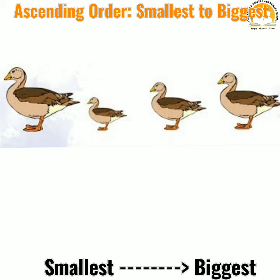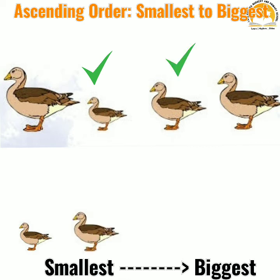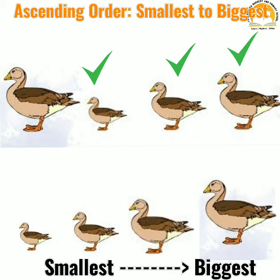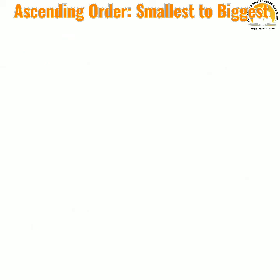Now have a look at this image. There are four ducks in this image. We are going to arrange them in ascending order, that is from smallest to biggest. This is the smallest duck — very good. This comes first and this comes second. This duck comes third and finally the bigger duck comes at the last. This is the ascending order of the ducks of different sizes.